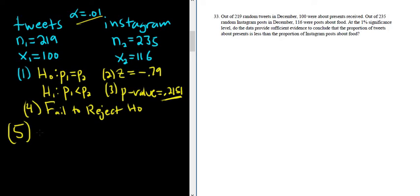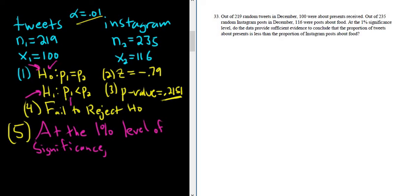Step five is the interpretation. So we always start our interpretations by mentioning the level of significance. So in this case, alpha is 0.01, so it's at the 1% level of significance. And the way we would do this is, for example, if we were to reject H0, then there would be sufficient evidence to support the claim H1. So if we reject H0, there is enough evidence to support the claim that the proportion of tweets is less than the proportion of Instagram posts. Since we fail to reject, there is not enough evidence. So there is not sufficient evidence to claim that.